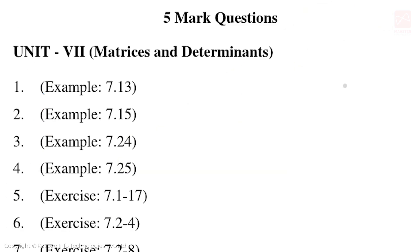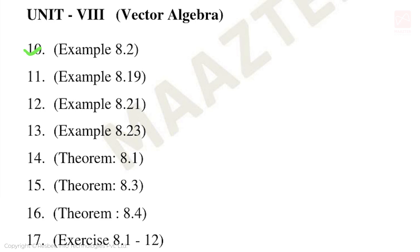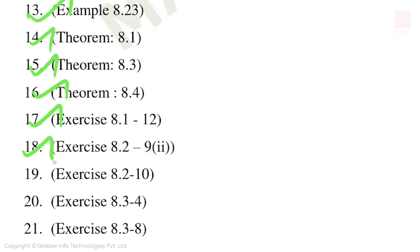Important 5-mark questions. Unit 7: Examples 7.13, 7.15, 7.24, 7.25. Exercise 7.1 sum number 17. Exercise 7.2 fourth, eighth, and 12th sum. Exercise 7.3 fourth sum. Unit 8: Examples 8.2, 8.19, 8.21, 8.23. Theorems 8.1, 8.3, 8.4. Exercise 8.1 sum number 12. Exercise 8.2 ninth sum second subdivision, tenth sum. Exercise 8.3 fourth and eighth sum.